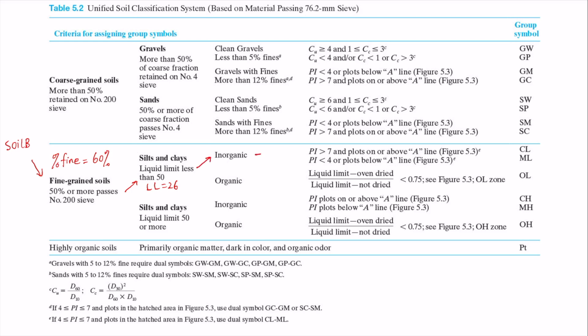And the plastic index for this soil B is 6. And if you look at these two conditions here, the top one, PI greater than 7, and bottom one, PI smaller than 4. So our soil PI 6 is in between these two values, and that's where you need to look. You need to look at this footnote E. So for footnote E, that's for case where PI is between 4 and 7. And you also need to check where your soil plots on that plasticity chart.